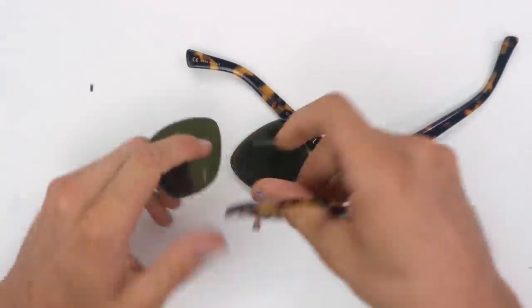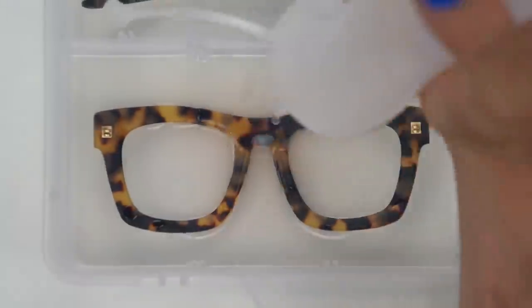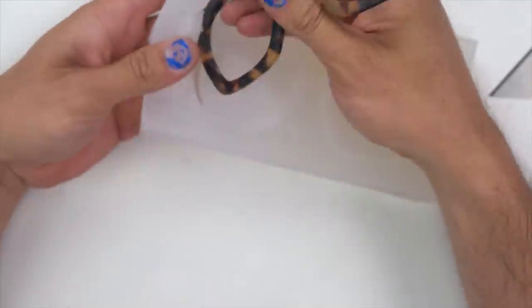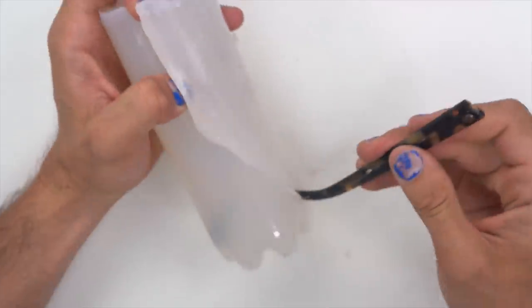All right, so we have some of these glasses that I took apart and we're going to make a mold out of them using that silicone, doing the front and then also we did some of the legs.